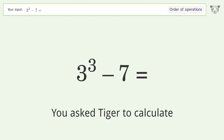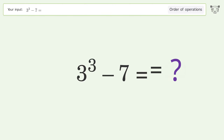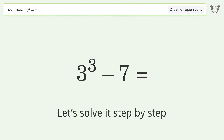You asked Tiger to calculate. This deals with the order of operations — the final result is 20. Let's solve it step by step.